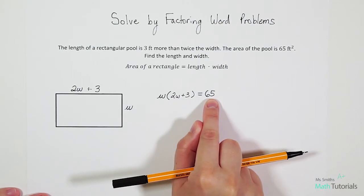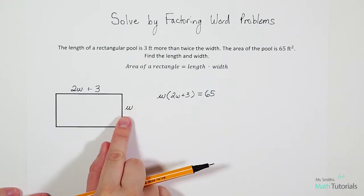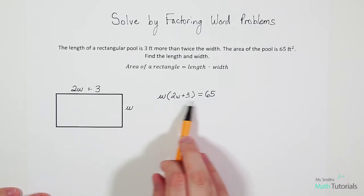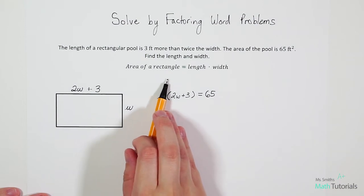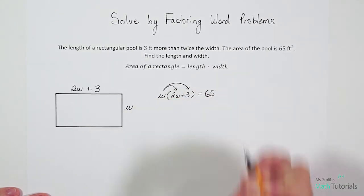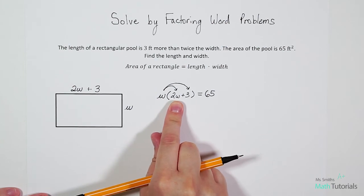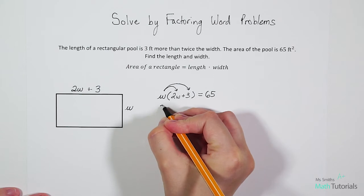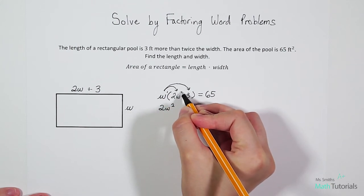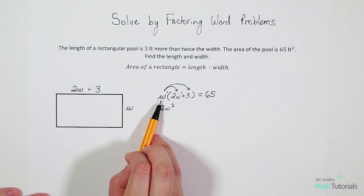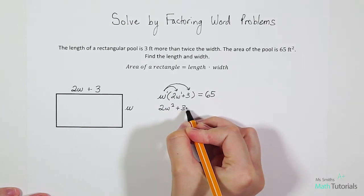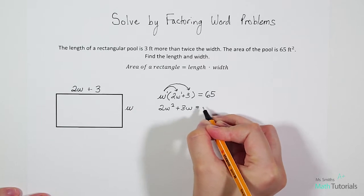We're going to take the width and we're going to multiply it by the length, 2W plus 3. And we know that that will equal the area of the rectangle, which it has told us is 65. So now we actually want to solve this problem for W. Because once we know W, we'll know the width, and then we can easily find the length. But first we got to solve for W. To solve this equation, we would want to distribute this W into the parentheses. So let's go ahead and do that. We're going to multiply the W in. Now W times 2W is 2W squared. And that goes into our laws of exponents. That this is a W to the power of 1 and a W to the power of 1. And when we multiply, we add them.